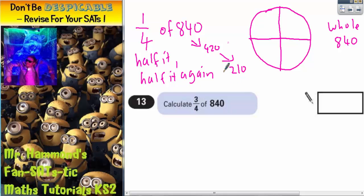So, one quarter equals 210. And now we can fill that in on our diagram. One quarter is 210. But we want three quarters. So, we want three of these pieces.